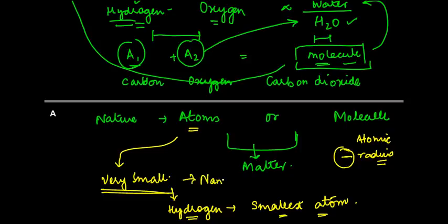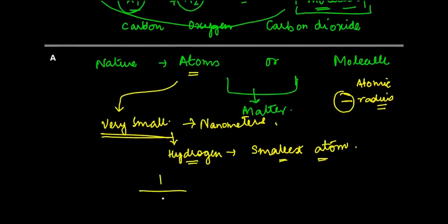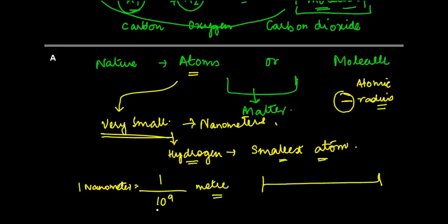You must be wondering what is a nanometer. A nanometer is nothing but it's actually a representation where you have 1 divided by 10 to the power 9 of a meter. So 1 nanometer equals 1 divided by 10 to the power 9 meter. In other words, if you have 1 meter and you divide it into so many segments such that you have 10 to the power 9, that's almost 100 crores or for people abroad, it's 1000 million.